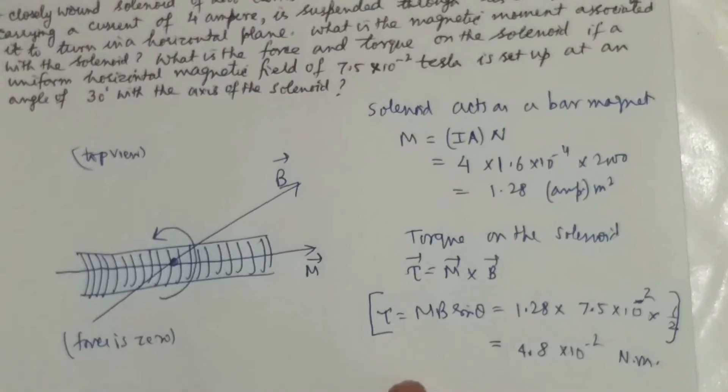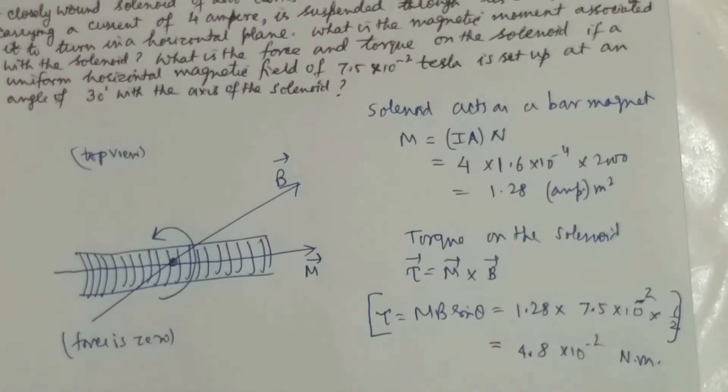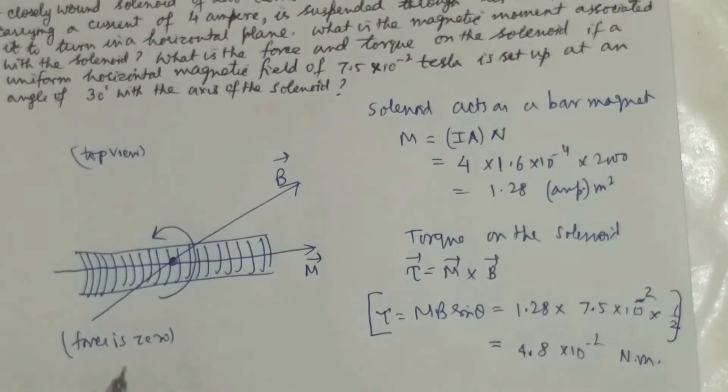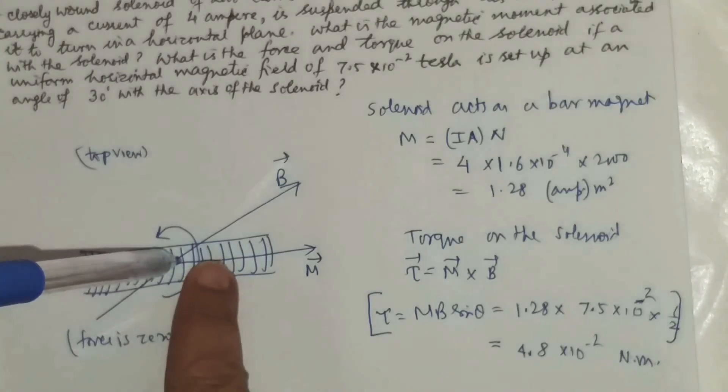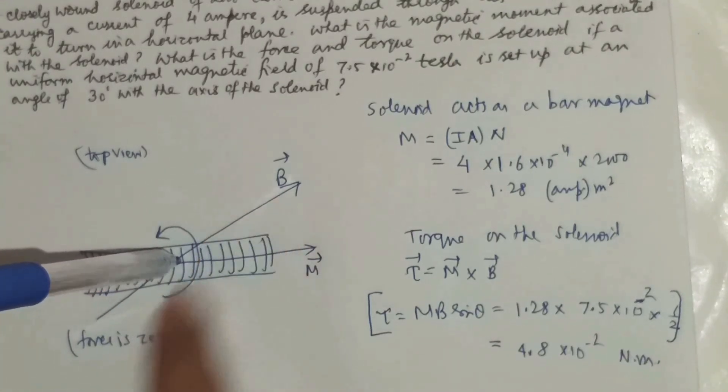So this will be the torque and the net force acting will be zero when the solenoid is placed like this and the tendency of rotation will be about this axis which is perpendicular to the direction of M and direction of B.